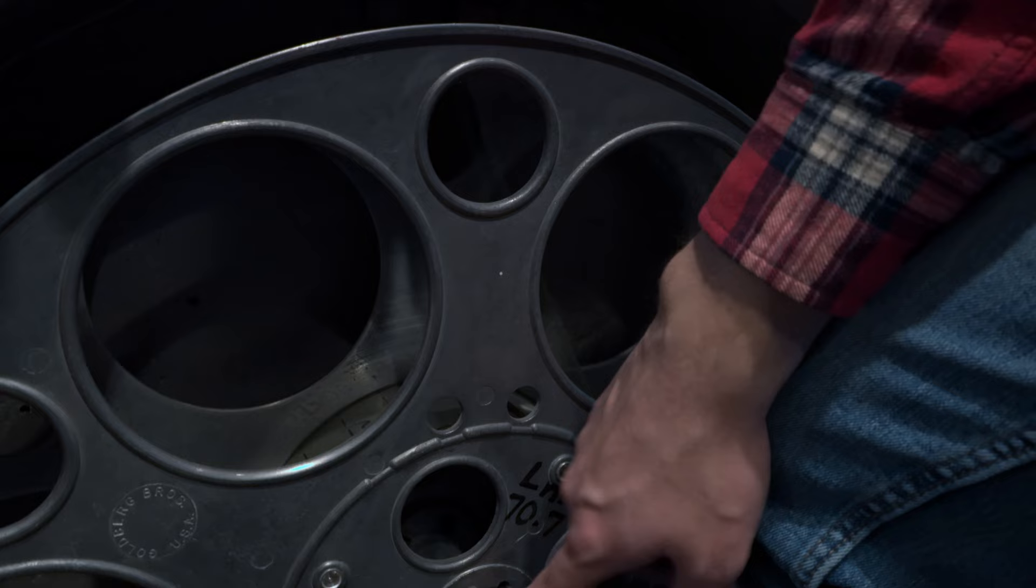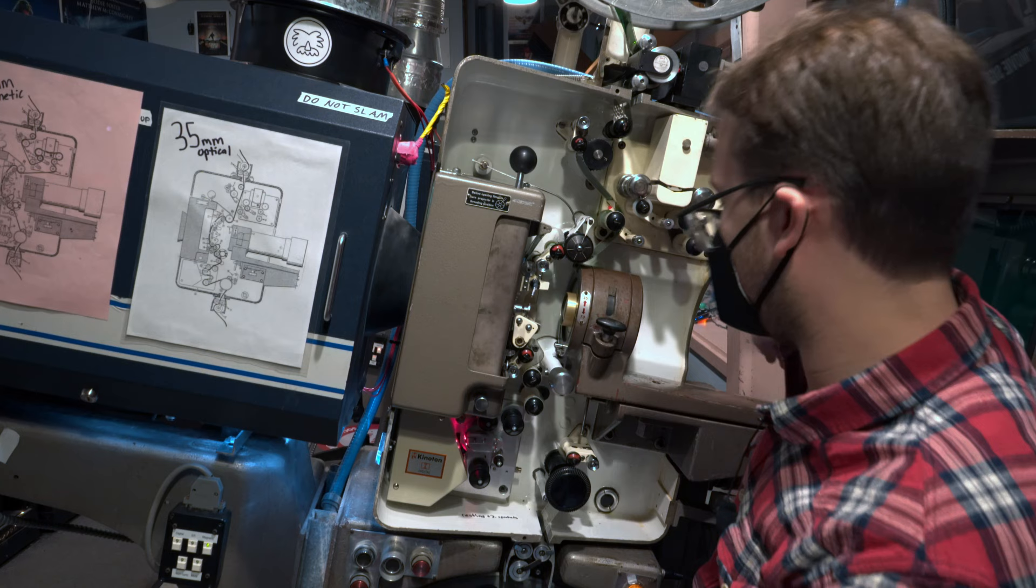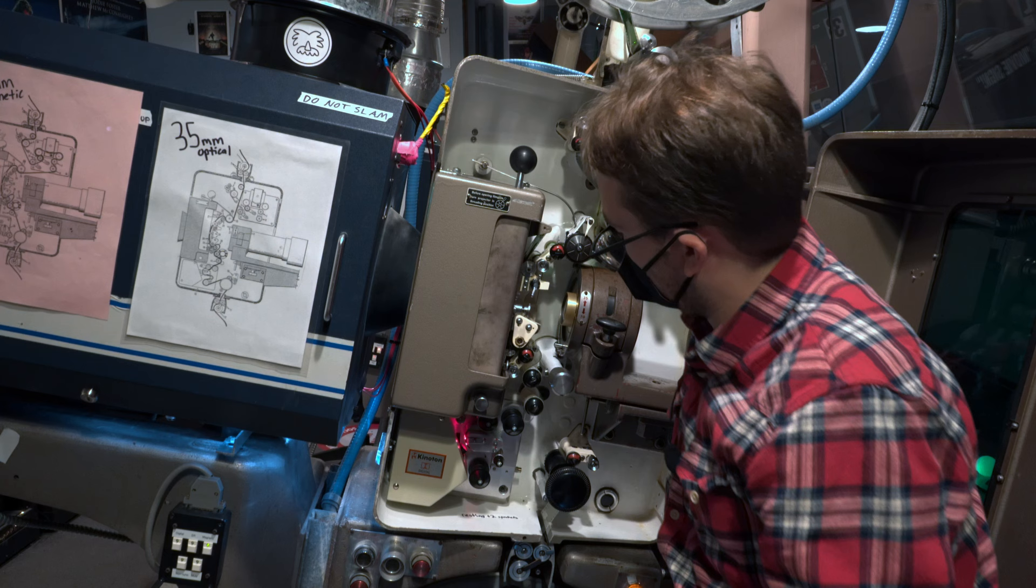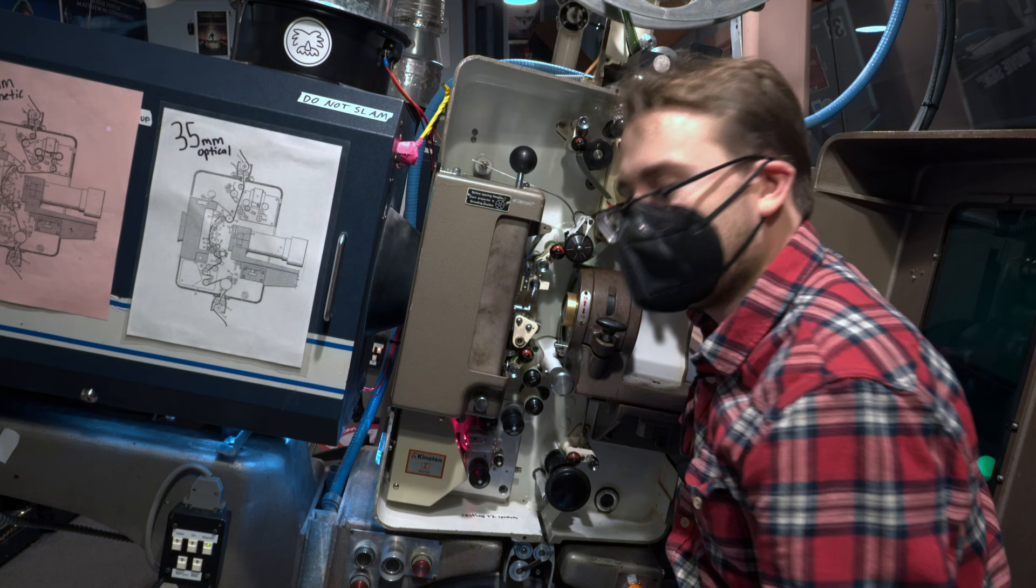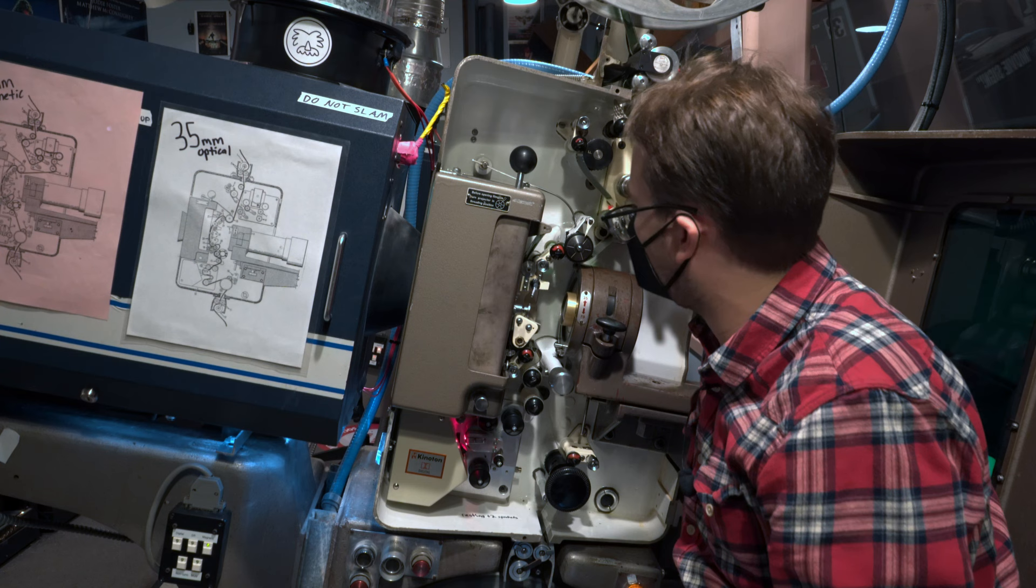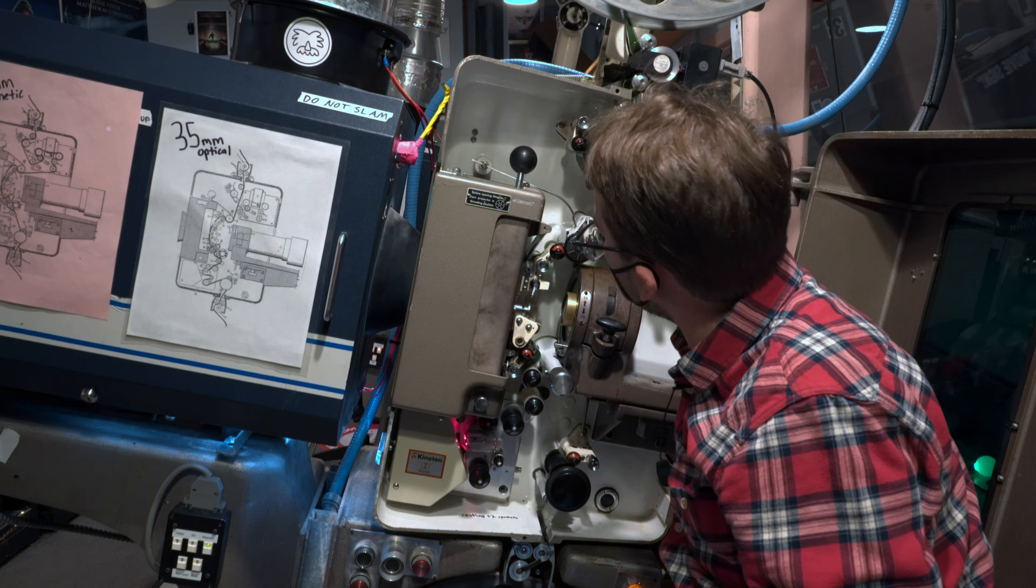All right now before we run this what we first want to do is do trial advance. And that is advancing the motor slowly and making sure the film moves and you don't hear any bad sounds or anything like that. Basically it's like a trial, it's literally called a trial advance for making sure it advances. So I crank it a few times. I see film coming in and out. I don't see anything getting too big. I don't see anything scraping against anything. So that should be good. I'm just gonna let it sit again right in threading position.